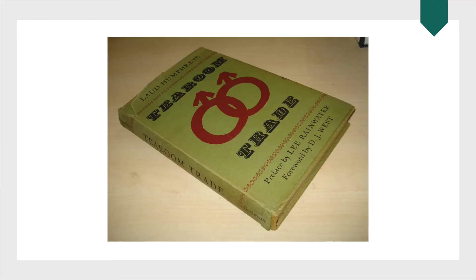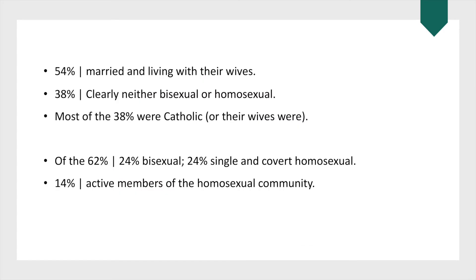Humphreys' findings destroyed many stereotypes. 54% of his research subjects were married and living with their wives, and a superficial analysis would suggest they were exemplary citizens with exemplary marriages. 38% of Humphreys' subjects were clearly neither bisexual nor homosexual — they were men whose marriages were marked with tension. Most of that 38% were Catholic, or their wives were, and since the birth of their last child, conjugal relations had been rare. Their alternative source of sex had to be quick, inexpensive, and impersonal — it could not entail any involvement that would threaten their already shaky marriage or jeopardize their standing as father of their children.